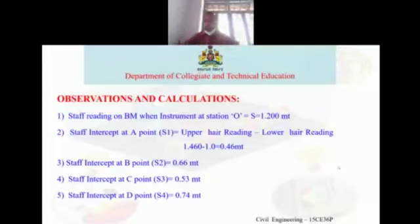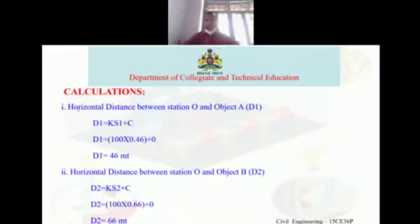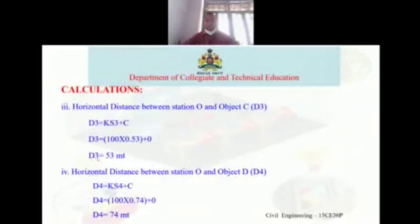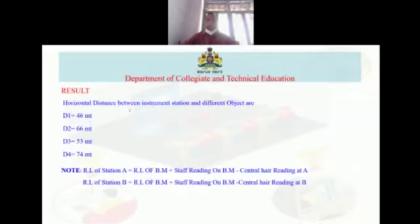The staff intercept at station A is S1 = upper hair reading − lower hair reading. Similarly S2, S3, S4 are calculated. The horizontal distance D1 = k × S1 + c, and likewise for D2, D3, D4. The results show: D1 = 46 m, D2 = 66 m, D3 = 54 m, D4 = 64 m. You can find the distance for any number of stations in this way.